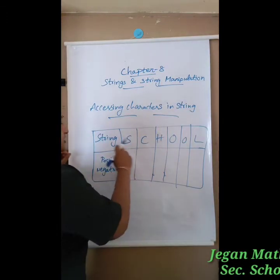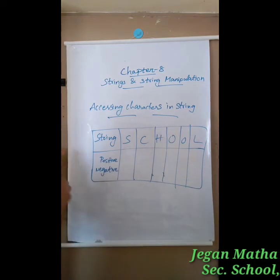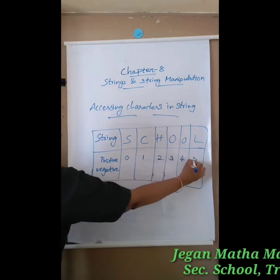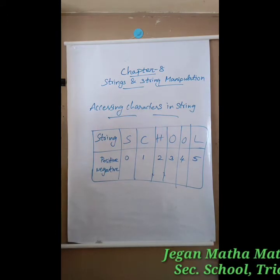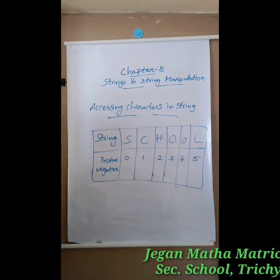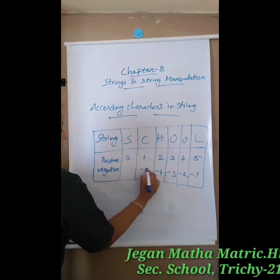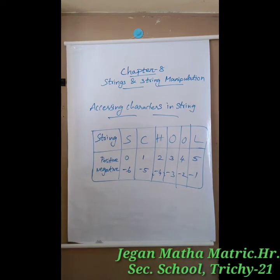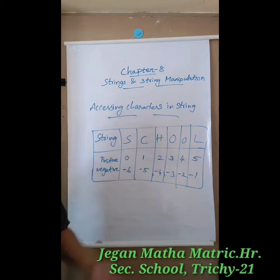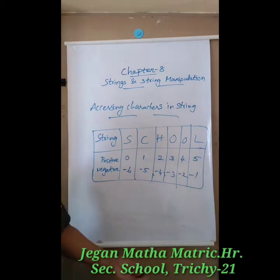For example, consider the string 'SCHOOL' — S, C, H, O, O, L. The positive index values are 0, 1, 2, 3, 4, 5 for each character. The negative values begin with minus 1 at the last character and go in reverse order: minus 1, minus 2, minus 3, minus 4, minus 5, minus 6. So positive values run 0 to 5, and negative values run minus 1 to minus 6 in reverse. This is how we access characters in a string.